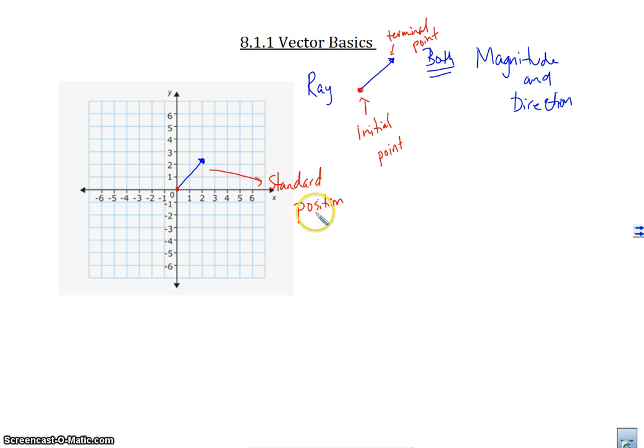Now, I can write a vector that's in standard position in two ways. I can write it in what we call component form. And component form basically is where I have the components, x2 minus x1, which is the points. These are the points, x2 minus x1, comma, y2 minus y1. So I would subtract the points, and that would be component form.